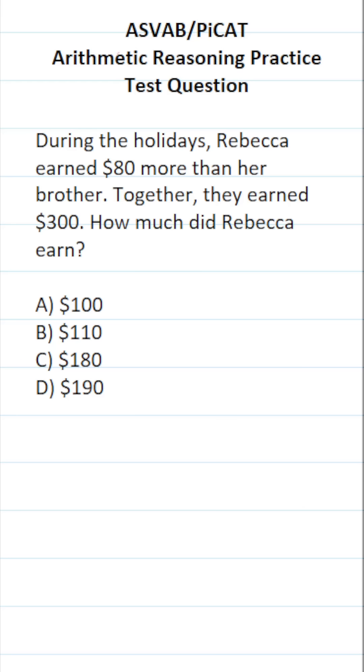We're going to have to translate these statements into an equation that we can then solve. We know that together they earned $300, but we don't know how much Rebecca or her brother earned. So let's say her brother earned X dollars - this is her brother's earnings. And we know, according to the problem, she made $80 more than her brother. So her earnings would be X plus 80. This is how much Rebecca earned.